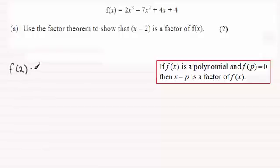Have a look at what f of 2 is going to be. So that would be 2 times 2 cubed, and then minus 7 times 2 squared, plus 4 times 2, and then plus 4.